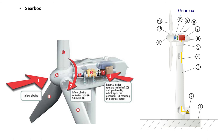Next in the list is the gearbox. In conventional wind turbines, the blades spin a shaft that is connected through a gearbox to the generator. The gearbox converts the turning speed of the blades — 15 to 20 rotations per minute for a large 1 megawatt turbine — into a faster 1800 revolutions per minute that the generator needs to generate electricity.